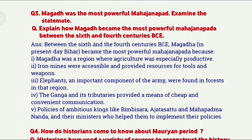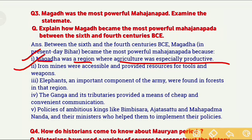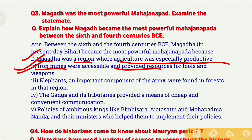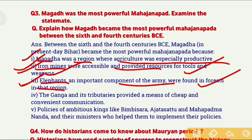The first reason is that Magadha was located in a region where agricultural production was very high. The second reason is that the area where Magadha was located had iron mines — iron being a very important resource for making tools and weapons. The third important reason is that elephants were also a very important component of the army, and in Magadha's forests, elephants were easily available.